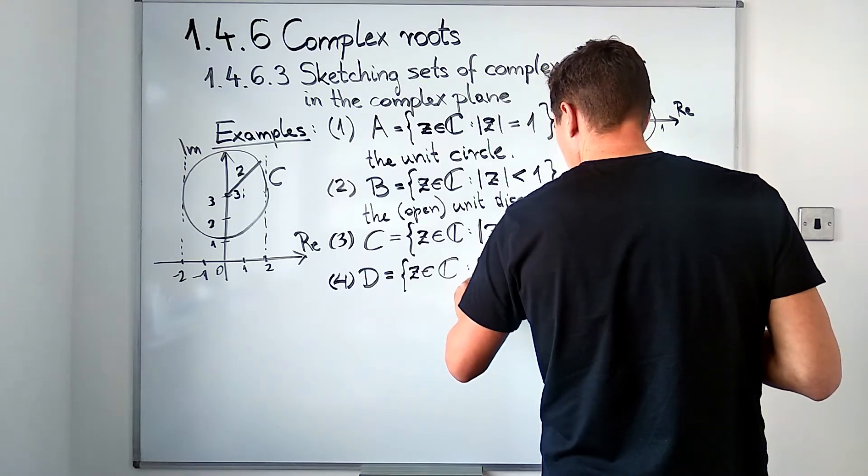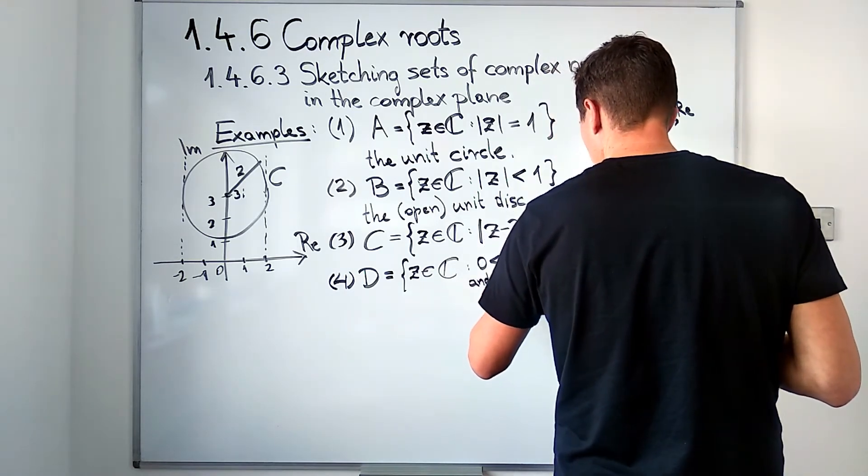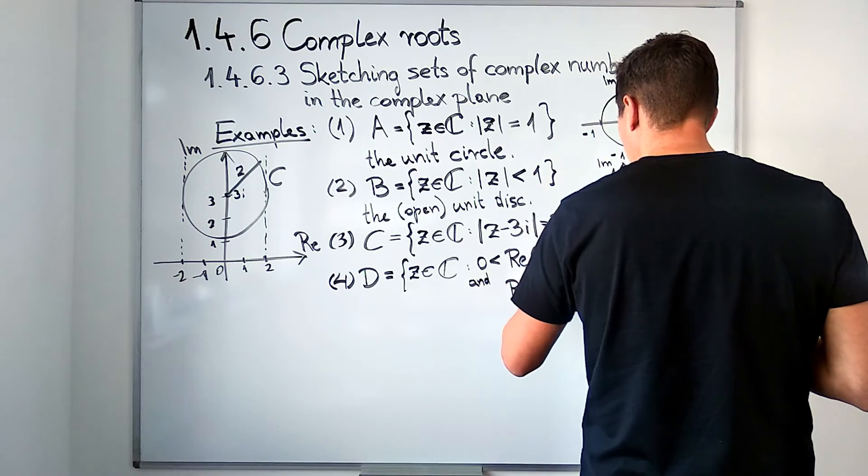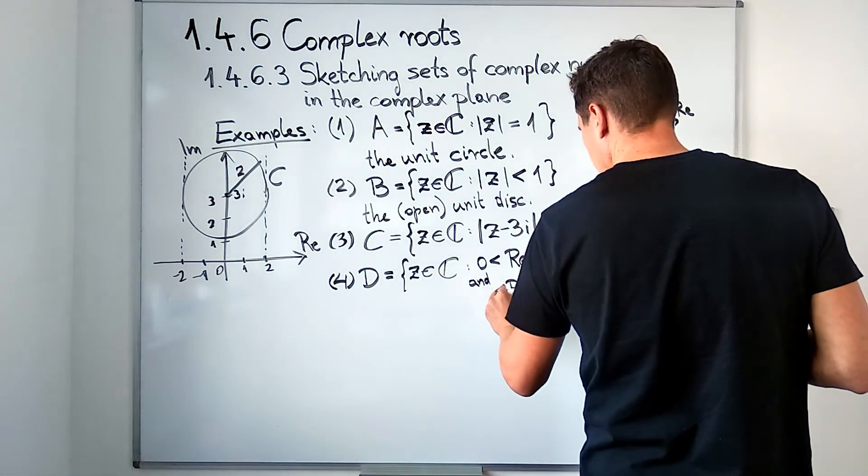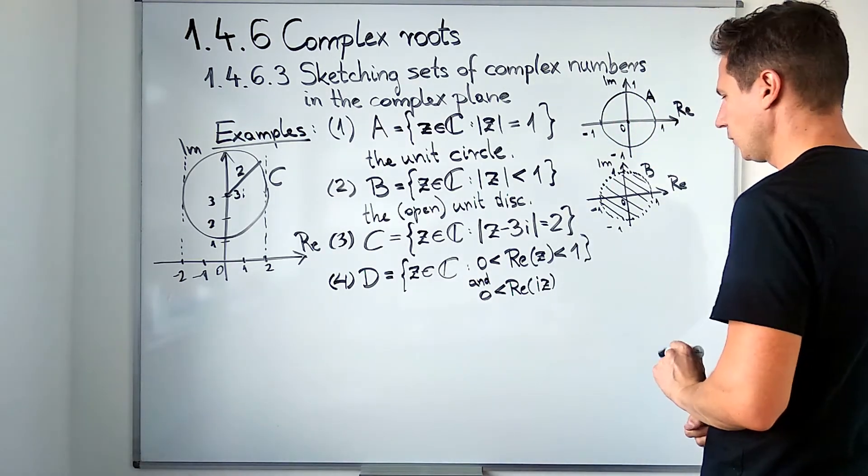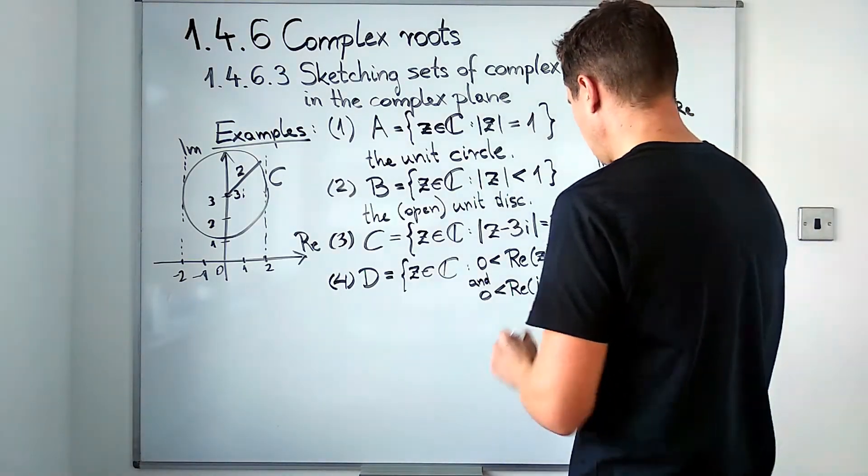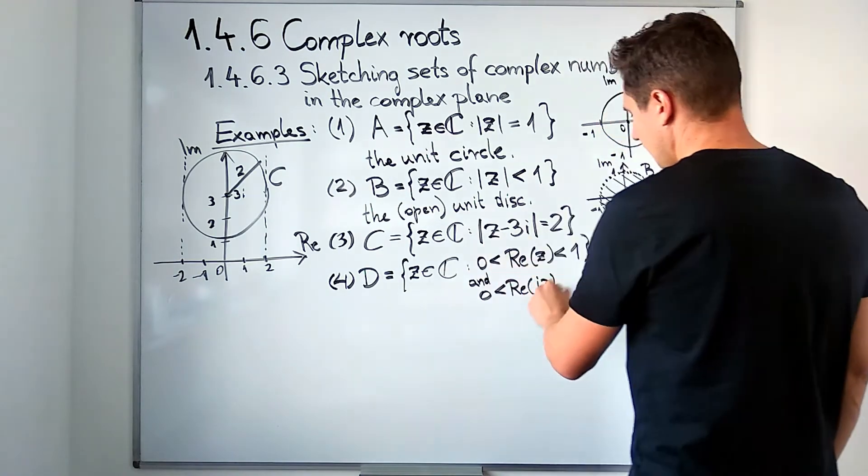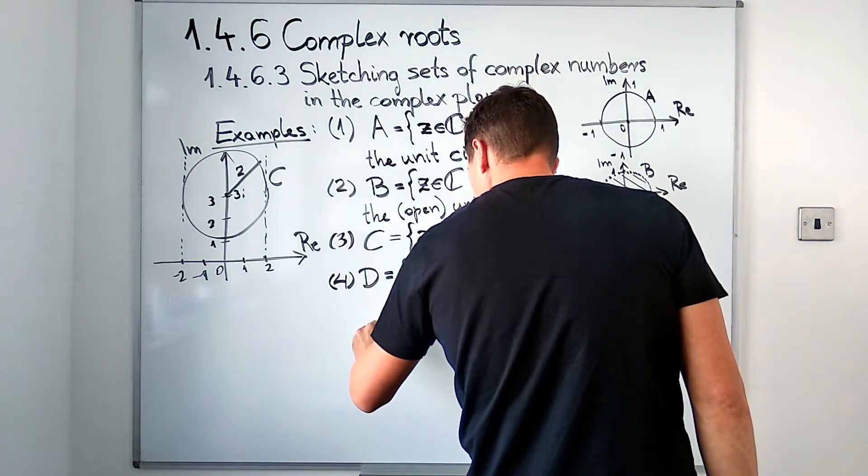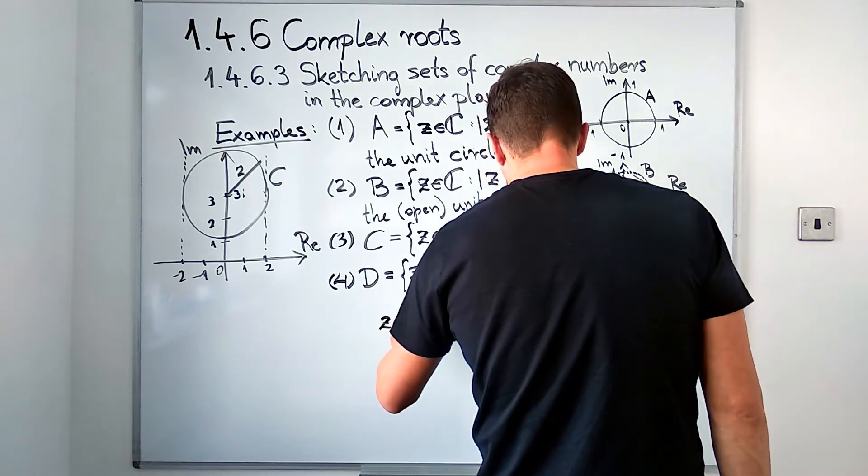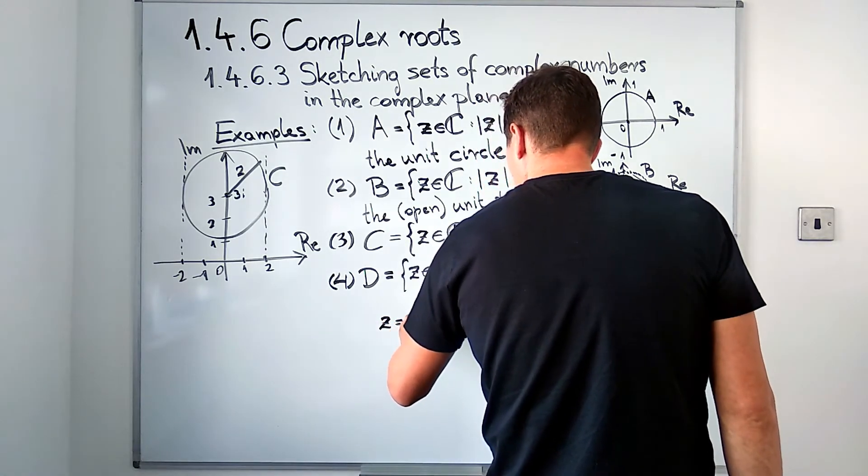A second relation is also given by that i times z should have real part that is greater than zero, but there is no upper bound to it. Let's try to translate these relations, these inequalities, into the x and y coordinates.